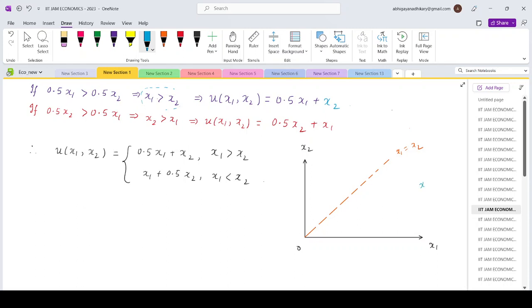The bottom part implies x₁ greater than x₂, and the upper part implies x₁ lesser than x₂, right? That's the region.